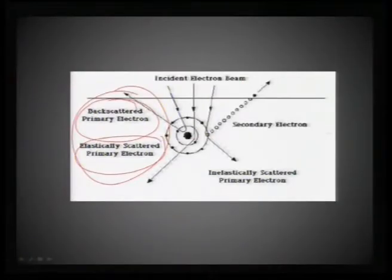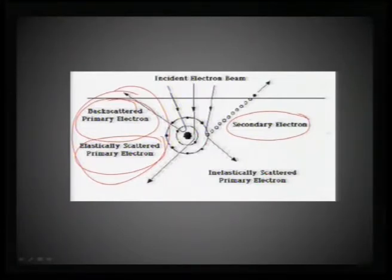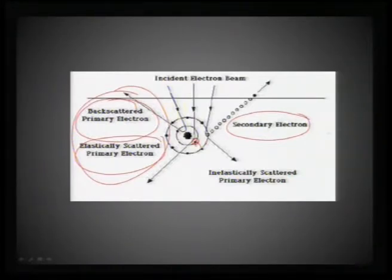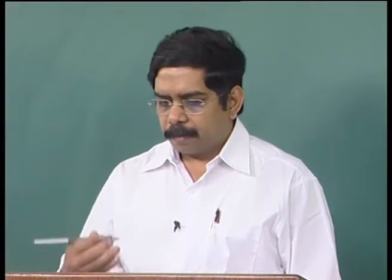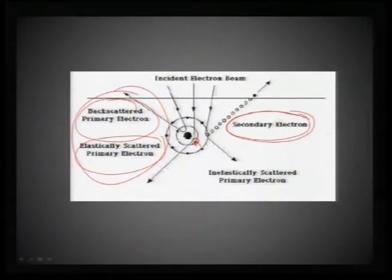The way backscattering occurs tells us what sort of nucleus is being interacted with. There is also a secondary electron image, which gives other information beyond backscattered data. Additionally, X-rays can be produced when an inner core electron is knocked out and outer shell electrons come in to fill it. So three distinct processes happen when an electron beam interacts: backscattered electrons, secondary electrons, and X-ray production — all of which can be converted into image form.